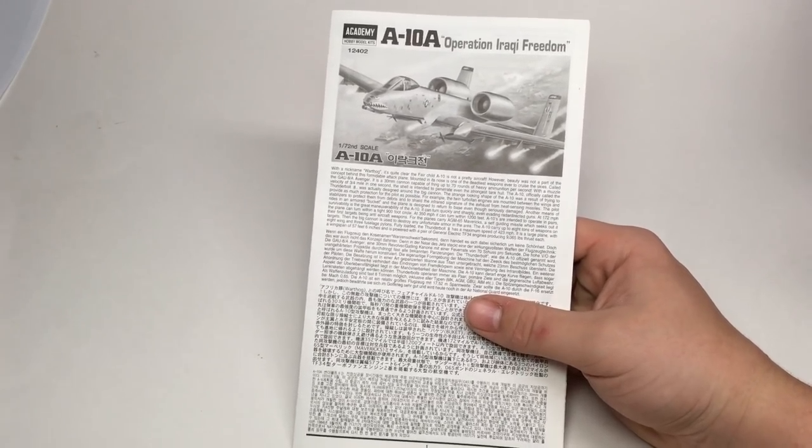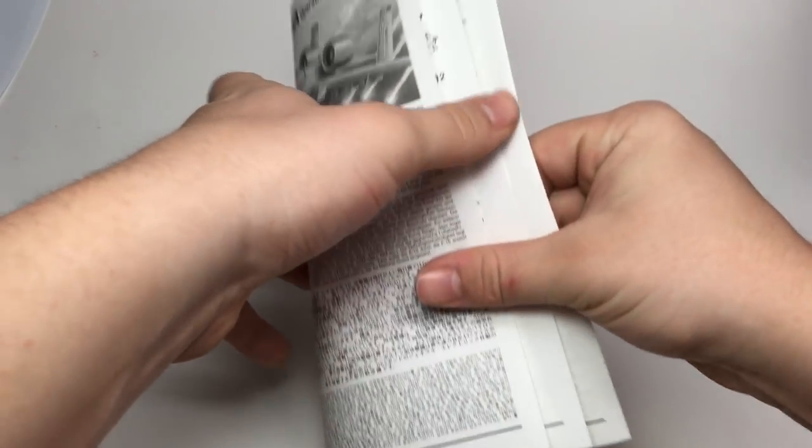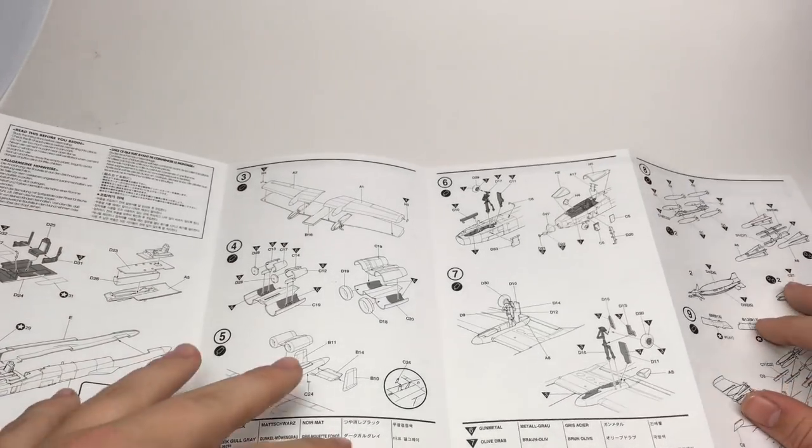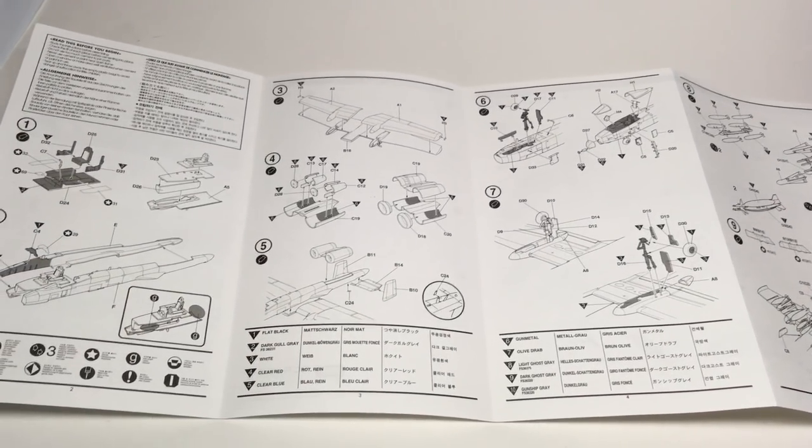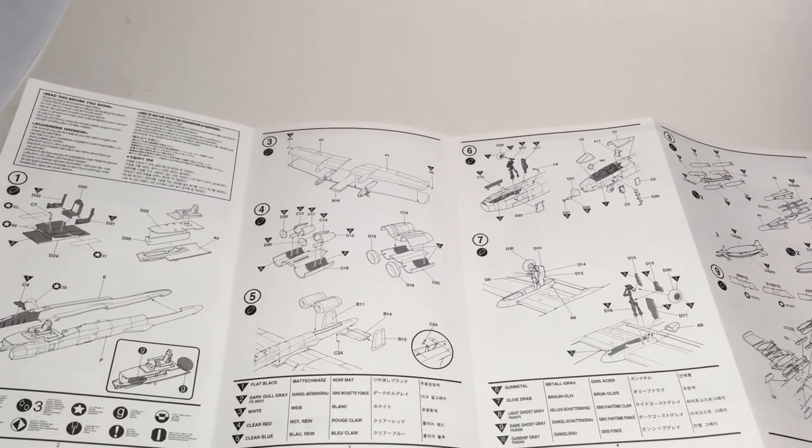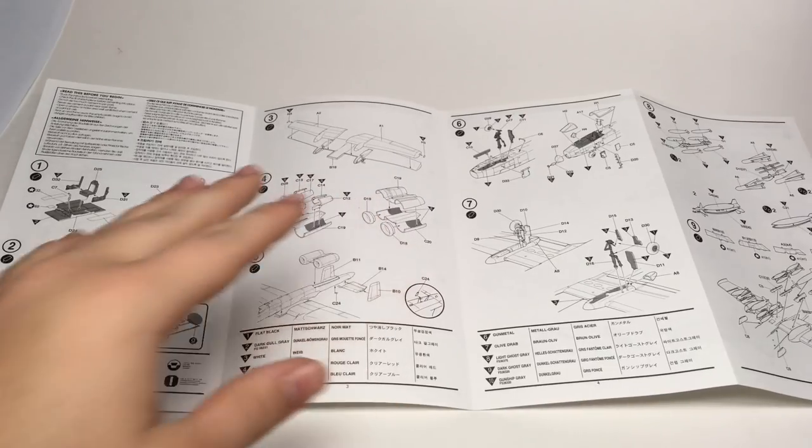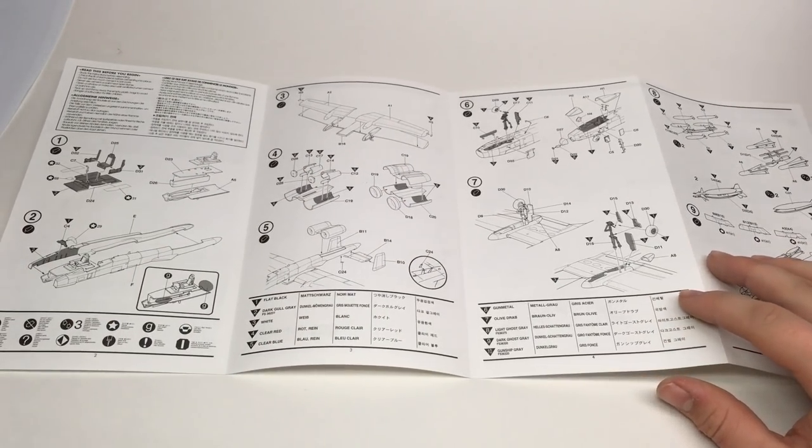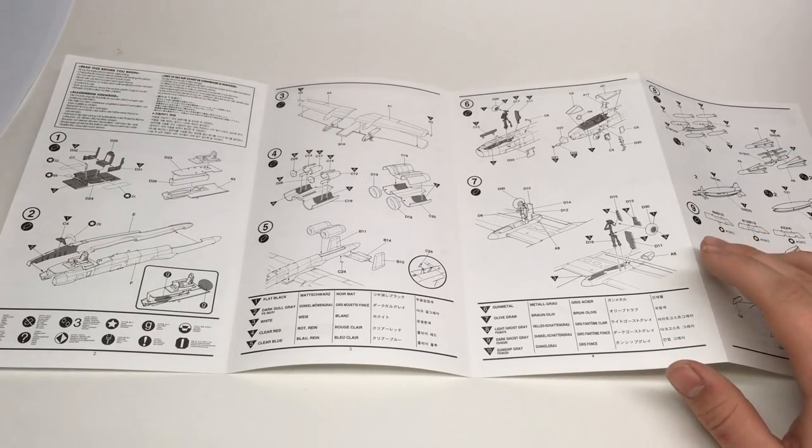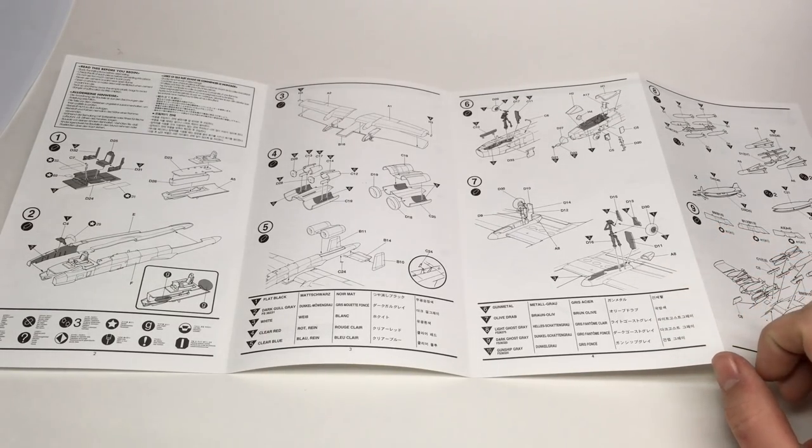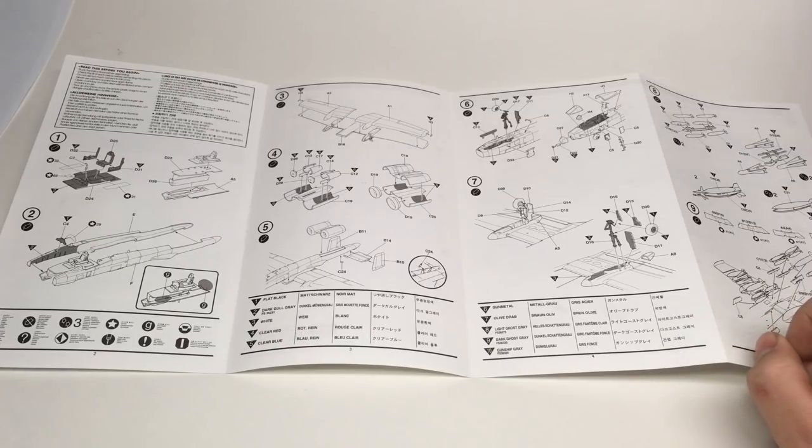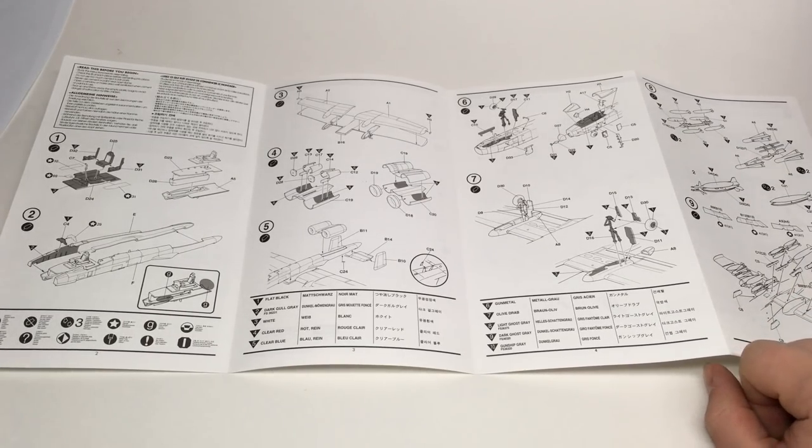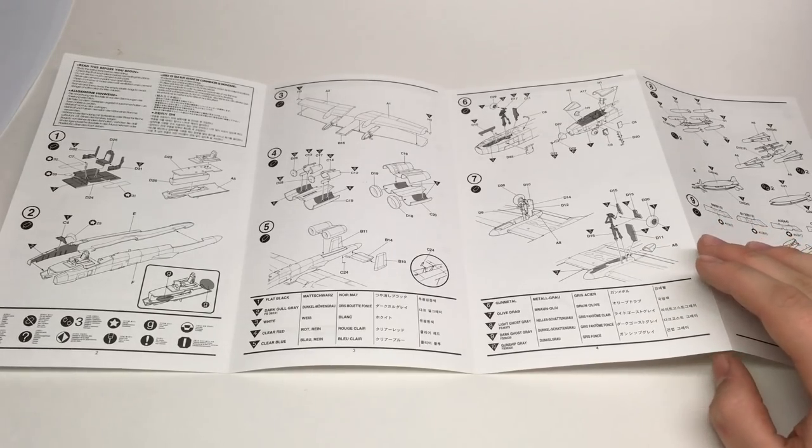First up, the instructions. These instructions are a brochure style, that is a single sheet of paper which has been folded over into itself. Now, typically I am not a big fan of these kinds of instructions, however, this kit is surprisingly simple, and it does not have that many steps, and those steps are not very complicated. It's a fairly low parts count for all the detail they managed to cram in. So in this instance, it's not that bad.